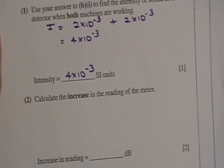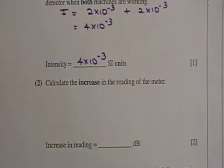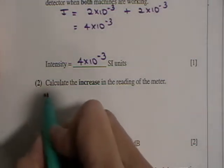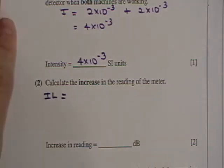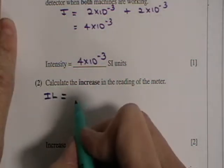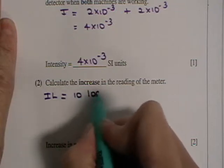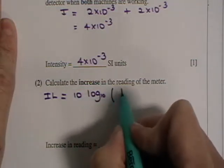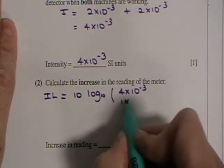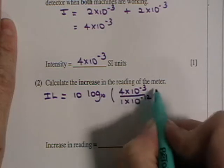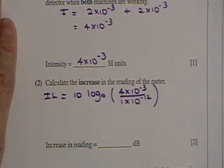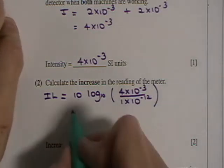Calculate the increase in the reading of the meter. So the meter is reading intensity levels, and so you have to calculate the total intensity level there. It's already reading 93 decibels, so if you get your intensity level and then take away 93, you'll get your increase. And so we're going to look for intensity level. And this time the intensity that's been used is 4 by 10 to the minus 3. So it's 10 log to the base 10, 4 by 10 to the minus 3 divided by 1 by 10 to the minus 12. And that answer comes out to be 96 decibels.